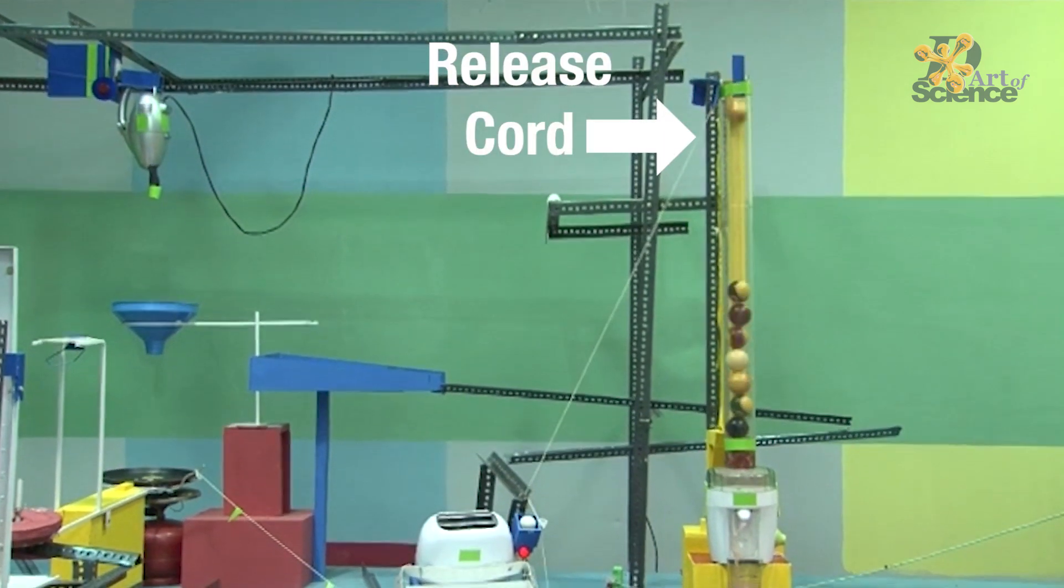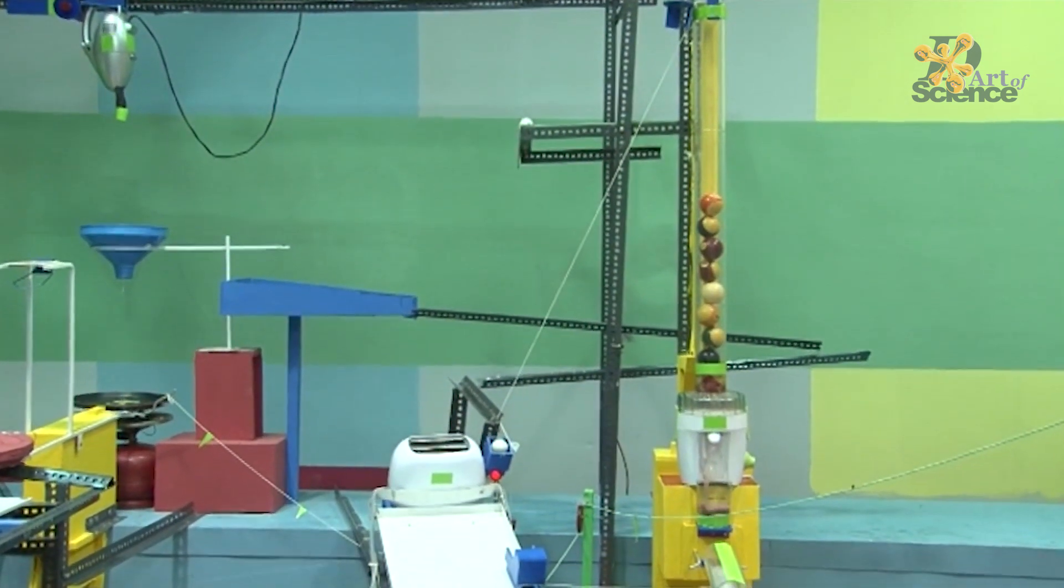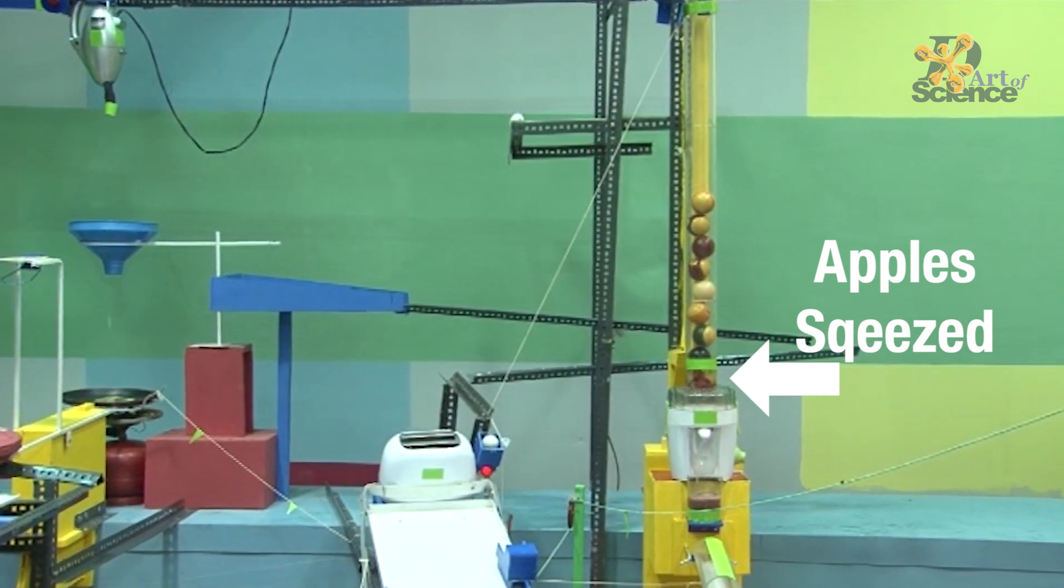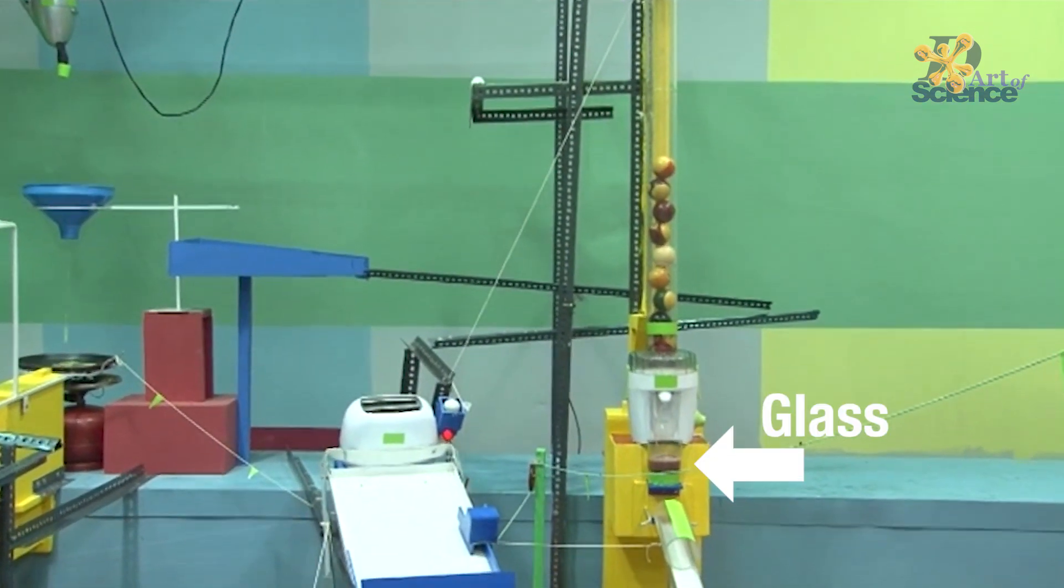The same ball also pulls a release cord holding many pool balls and it switches on the juicer. The pool balls fall on the apples and that squeezes them against the juicer and the juice comes out into the glass.